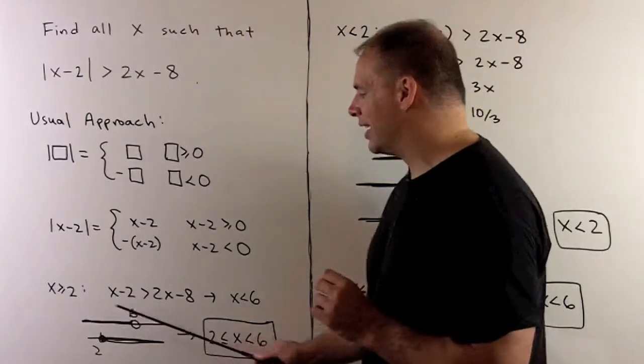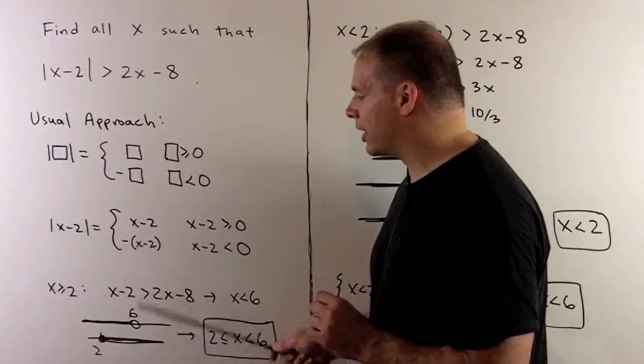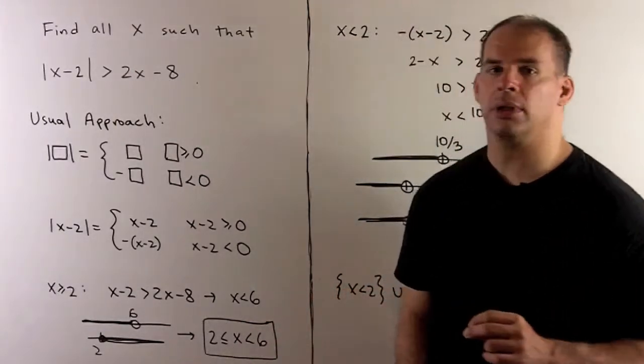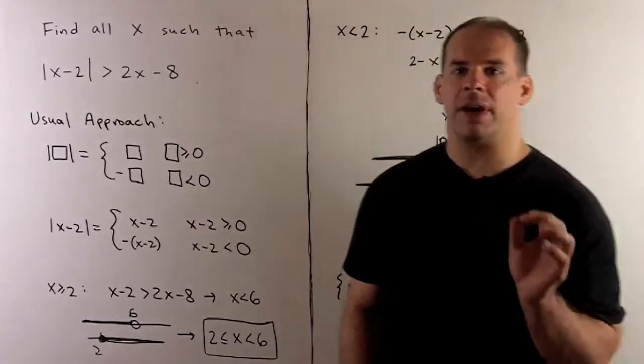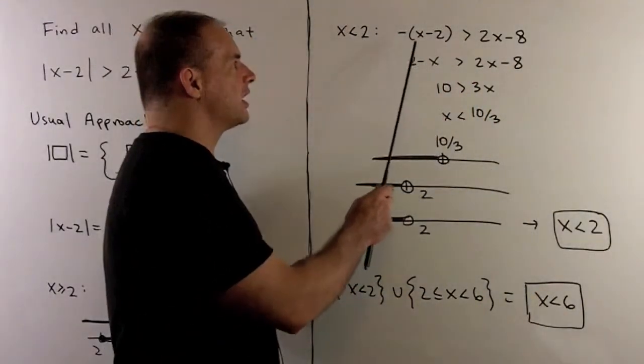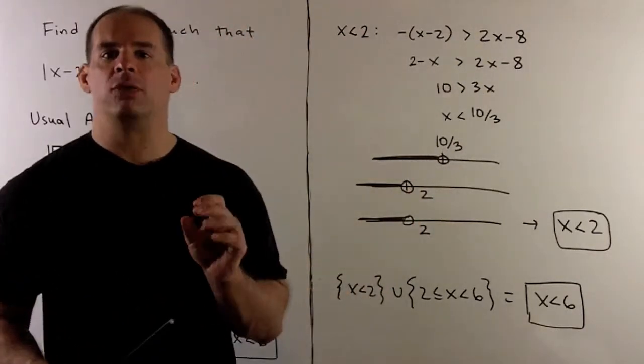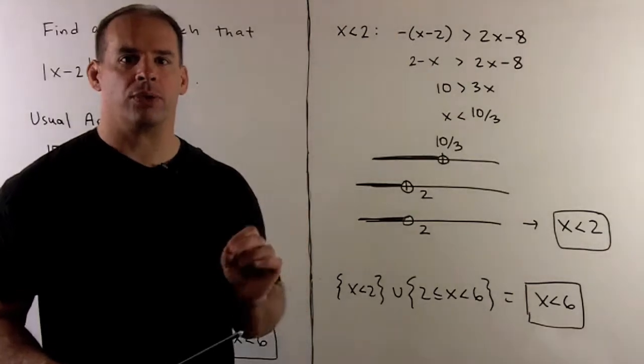I can think of it as taking these two regions, and then we just consider all points that are common to both regions. If I consider when x is strictly less than 2, minus parentheses x minus 2 greater than 2x minus 8. I solve, we get x strictly less than 10 over 3.